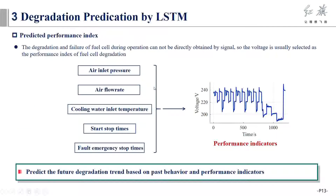The degradation and failure of fuel cell during operation cannot be directly obtained by signal, so voltage is usually selected. In addition to voltage, air inlet pressure, air flow rate, and cooling water inlet temperature are also used as input variables for prediction.